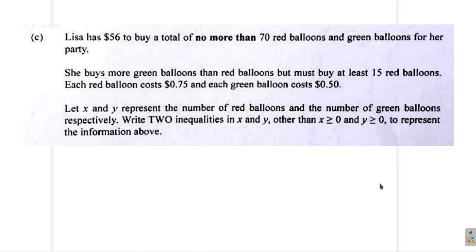Here we are looking at Part C of Question 2 from the January 2025 CSEC Mathematics Pass paper. It says that Lisa has $56 to buy a total of no more than 70 red balloons and green balloons for her party.